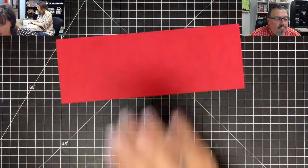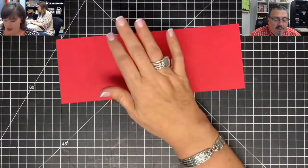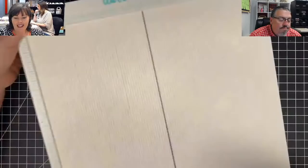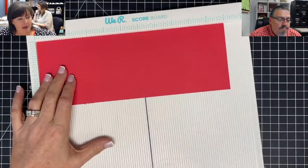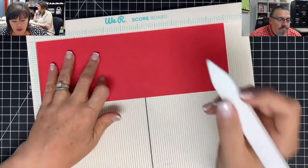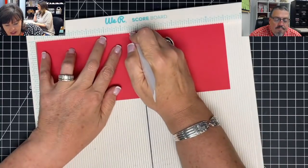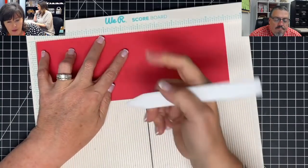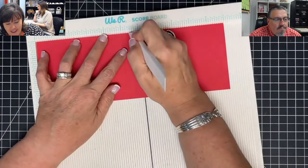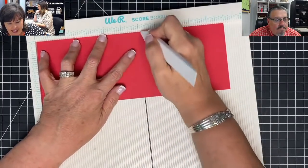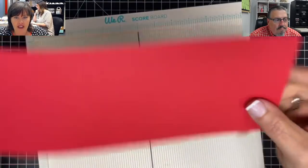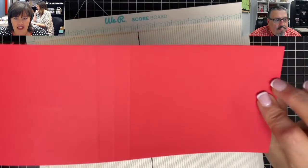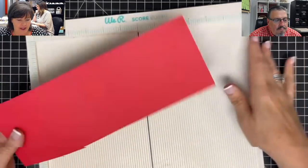You're going to start with a piece of card stock. This piece is 11 by 4. What you want to do is you want to score at 5, 5 and a half, and 6. So that's your score marks. There they are. You can kind of see them there.